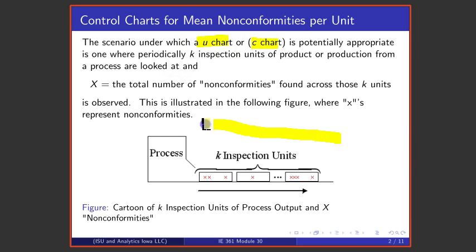The scenario under discussion is shown in this cartoon down here. The idea is that one has k inspection units, that box indicates one inspection unit, a second inspection unit, a third inspection unit, or k of them in total. And counts up these red x's that are nonconformities found in each one of those units and totals them.